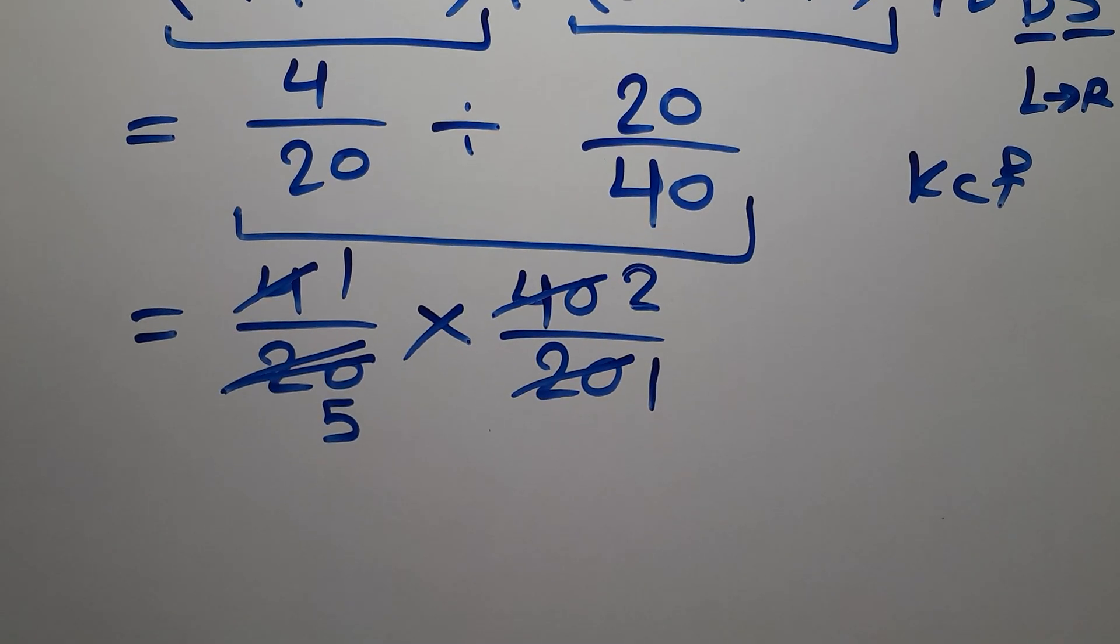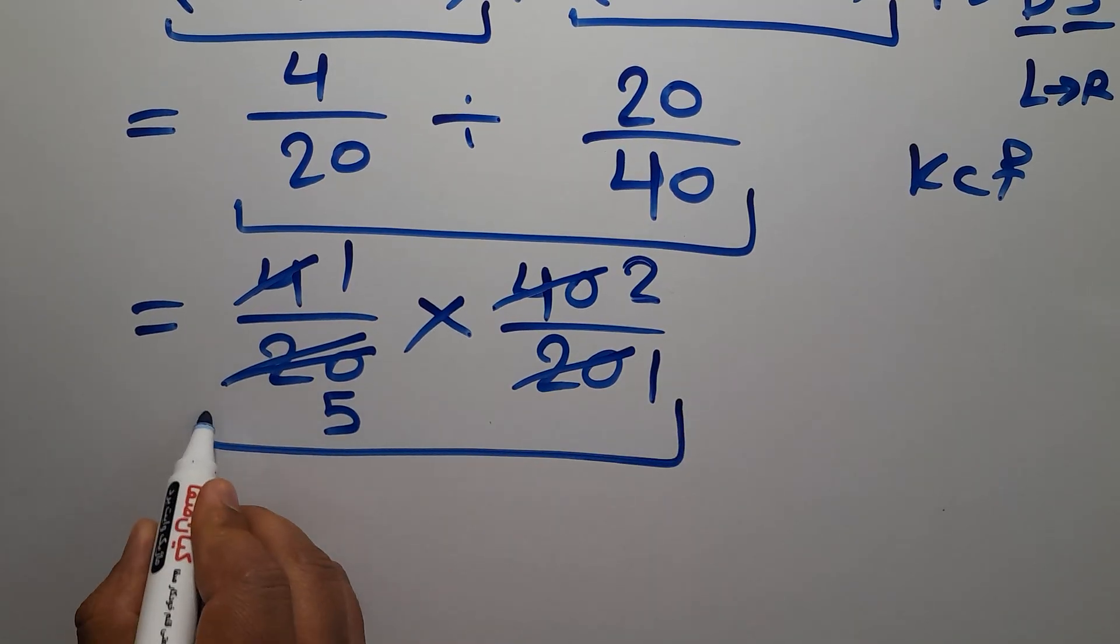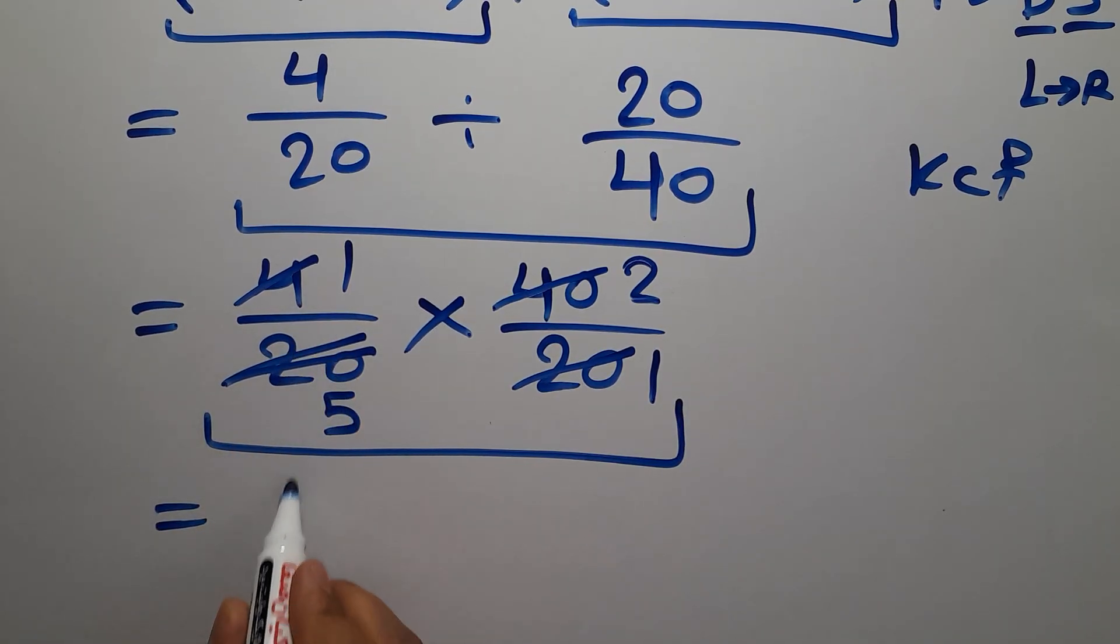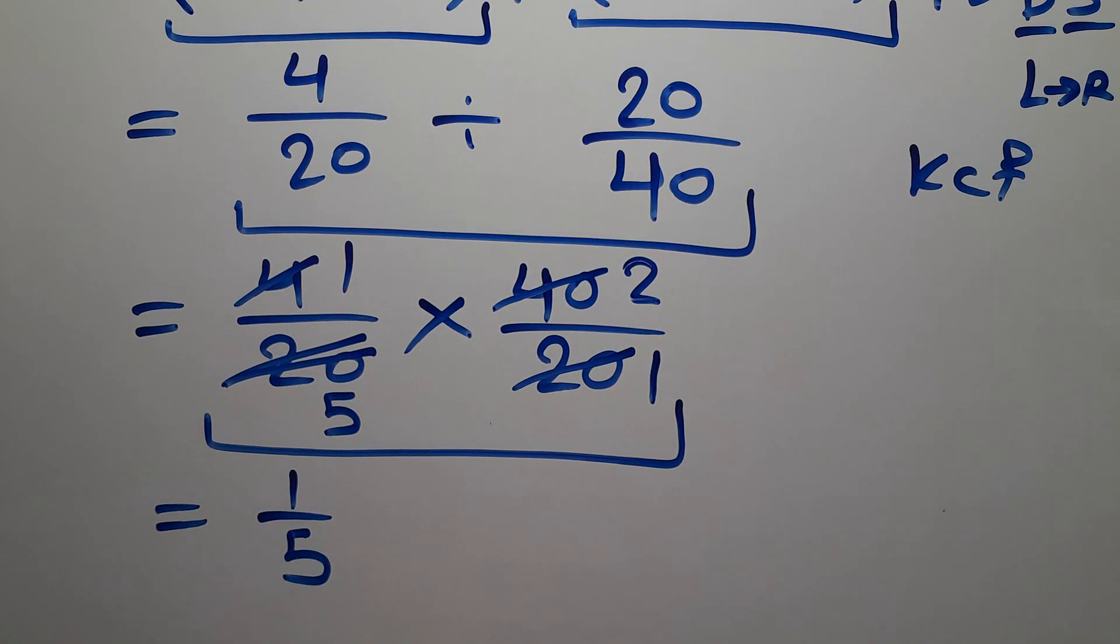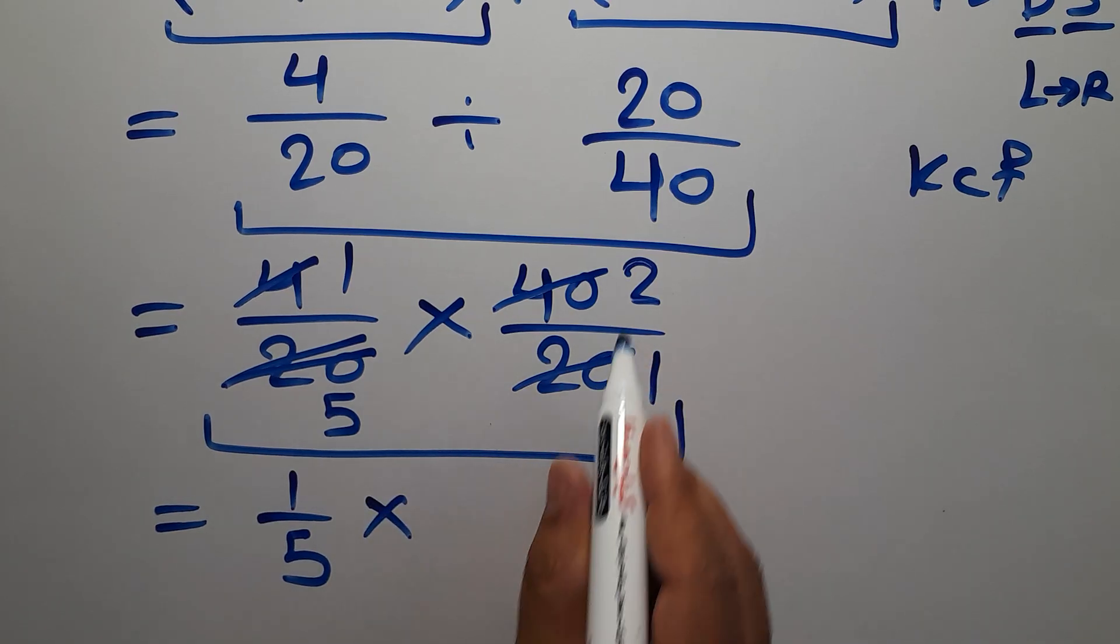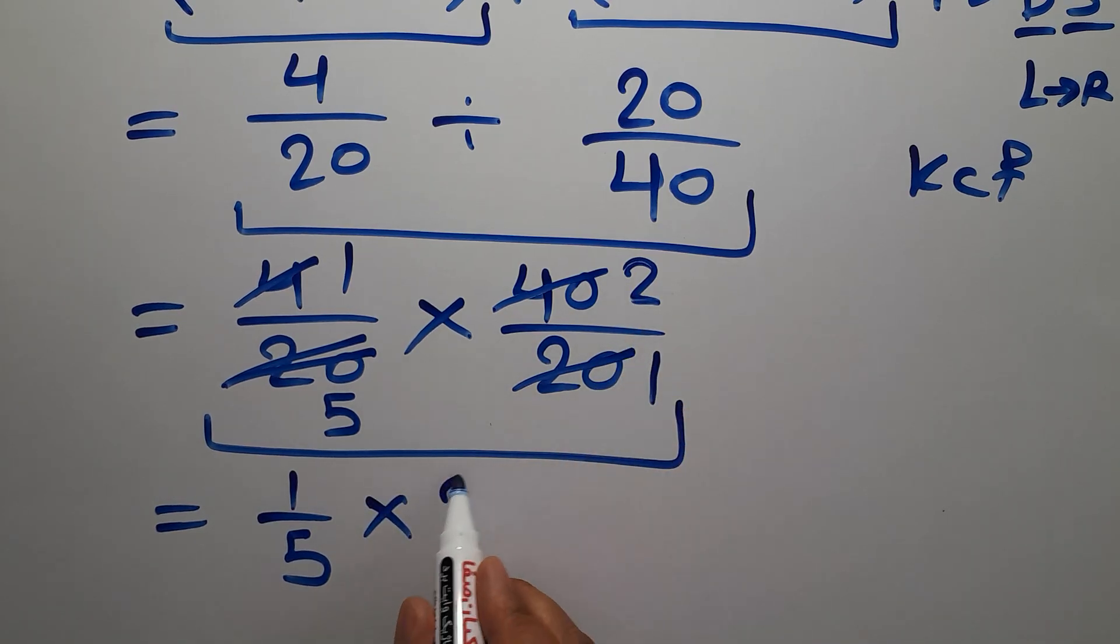So we have 1 over 5, then times just 2. 2 over 1 is just 2.